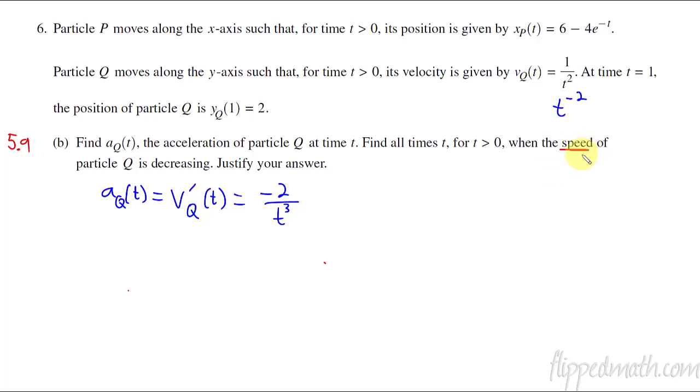Now the next part, they ask us about when is the speed decreasing for particle Q? We have to think about velocity and acceleration, and the signs must be different in order for the speed to be decreasing. So one way of doing that is to come up with a quick little chart. I'm looking at only the values, the interval from zero to infinity.